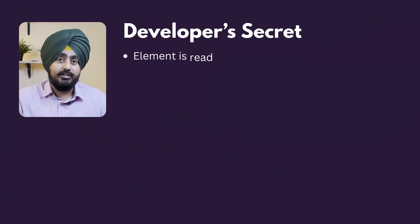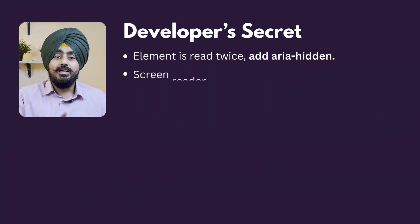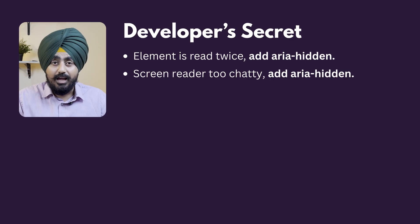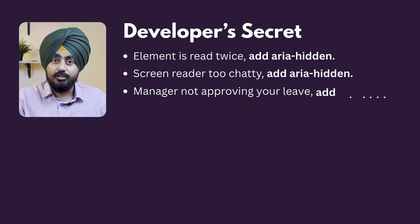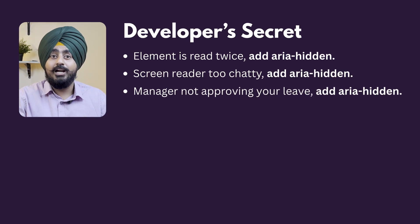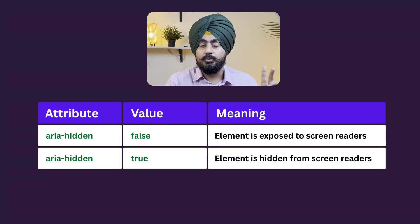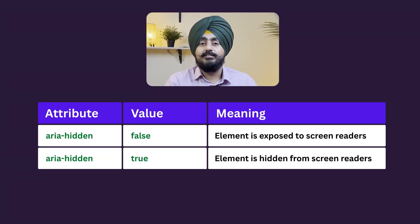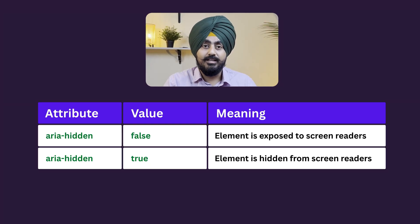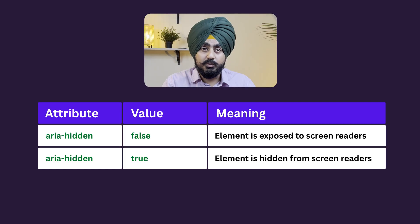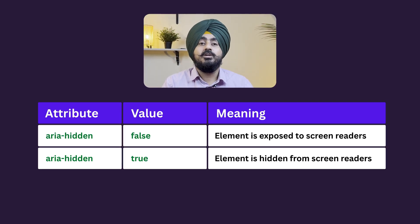Developers often use it as duct tape: element is read twice, add ARIA hidden; screen reader too chatty, add ARIA hidden. ARIA hidden can have two values — either false or true. By default it's set to false, which means screen readers will announce the content. When set to true, it will ignore and not announce.